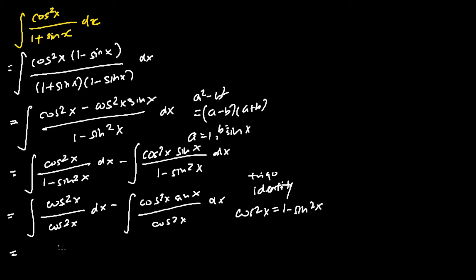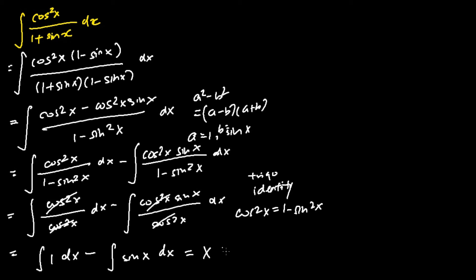I can now simplify the two integrals. The first integral will be the integral of just 1 dx, and the second integral will be the integral of sine x. I can now evaluate the integration. The integral of 1 dx is x, and the integral of sine x is negative cosine x. Hence, we have the final answer: the integral of cosine square x over 1 plus sine x dx is equal to x plus cosine x plus C.